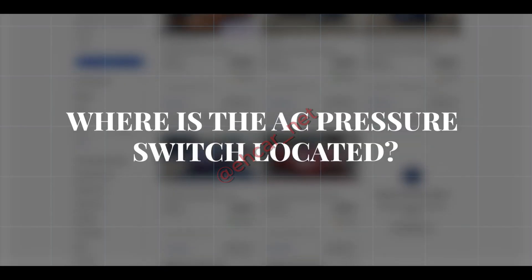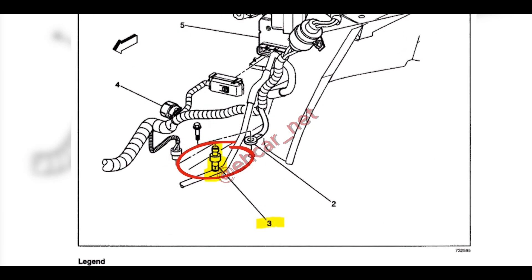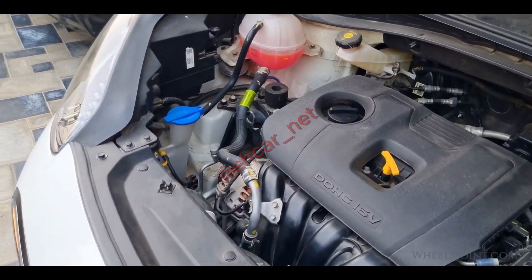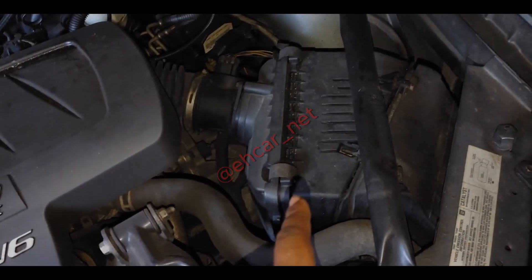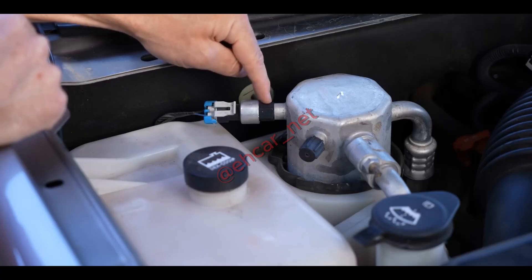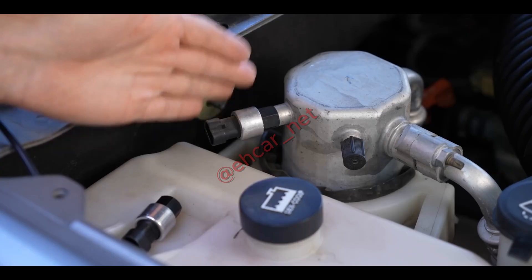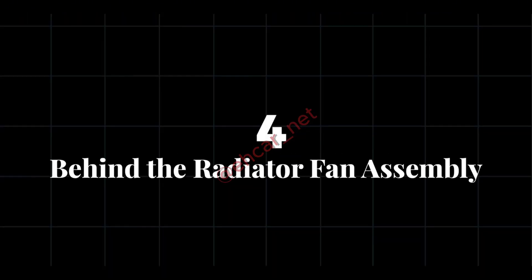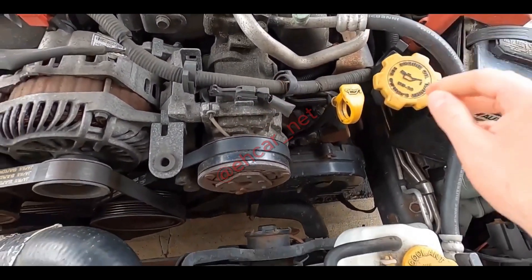So where is the AC pressure switch located? The AC pressure switch is typically located in one of the following areas, depending on the vehicle make and model: on the high pressure AC line, commonly found along the aluminum AC lines especially near the firewall in the engine bay; near the AC compressor, sometimes mounted directly on or near the compressor unit itself; on the AC dryer or accumulator — in some vehicles you'll find the switch attached to the dryer or accumulator canister, which is part of the AC system's refrigerant storage; or behind the radiator fan assembly — certain models place the pressure switch near the condenser, which is located in front of the radiator.